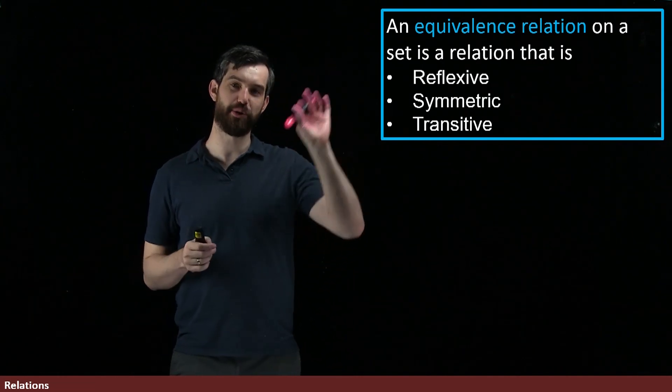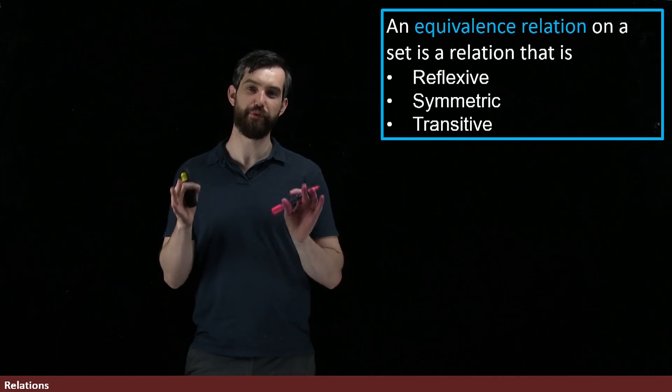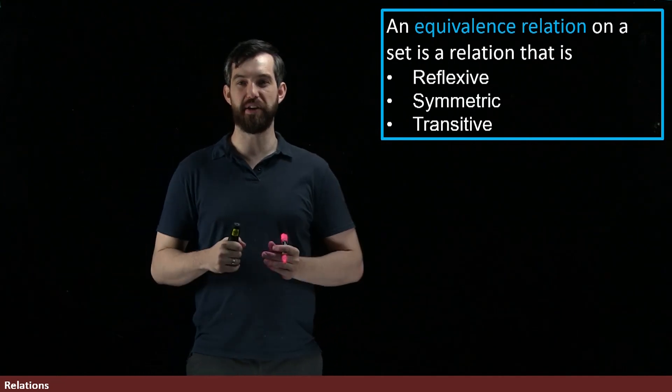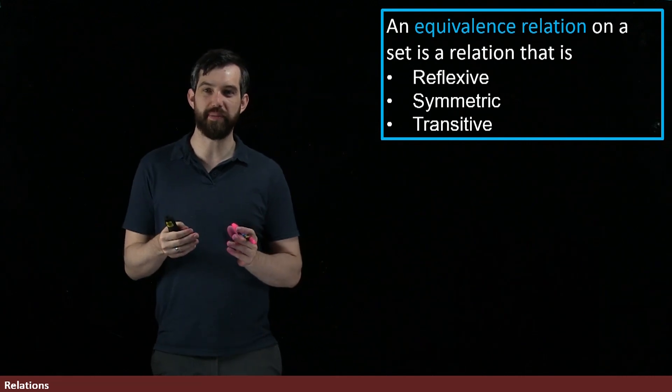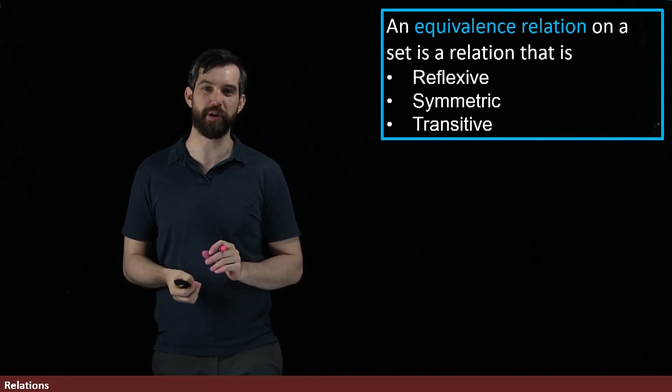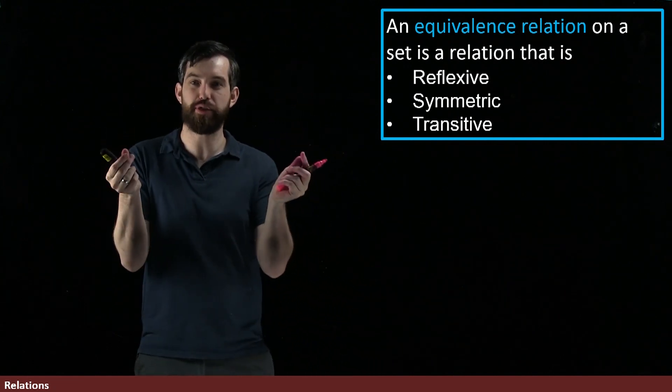I'm going to give two examples of equivalent relations that you've seen before. The first is actually just normal old equality of numbers. For example, if I just have integers, I want to see whether or not they satisfy these properties.